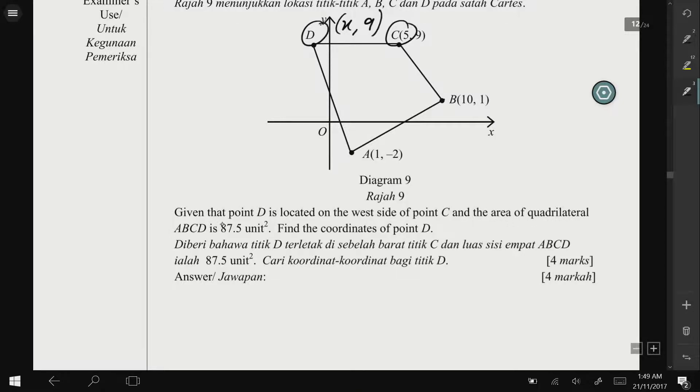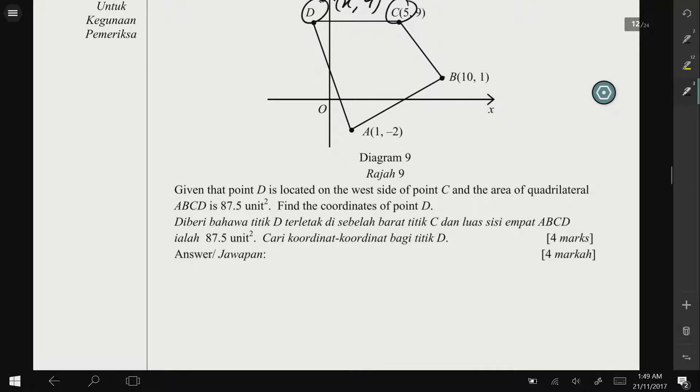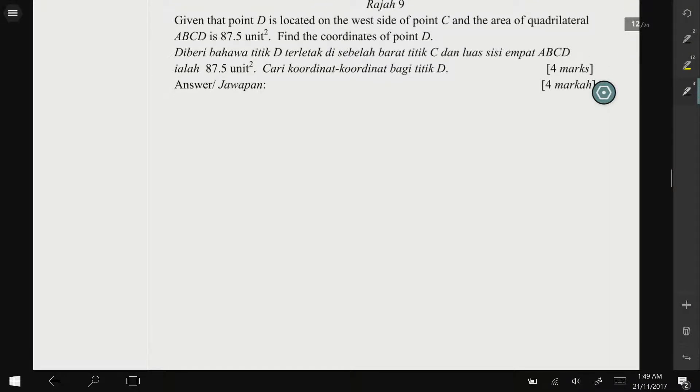And the area of quadrilateral ABCD is 87.5 unit square. Find the coordinates of point D. We know that the area of the quadrilateral is 87.5, so we can use the area formula which is in Chapter 6 Form 4.